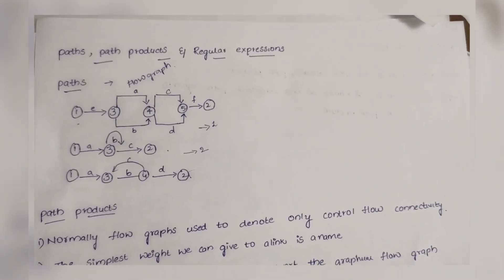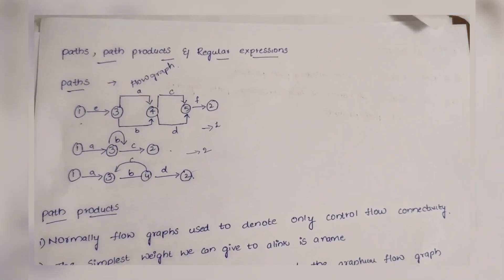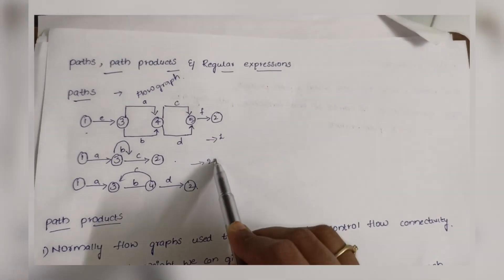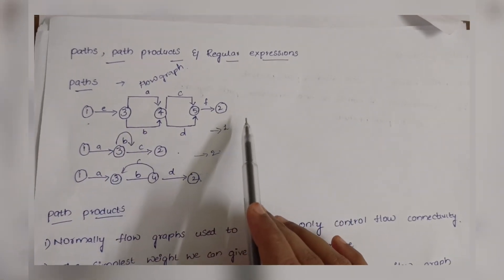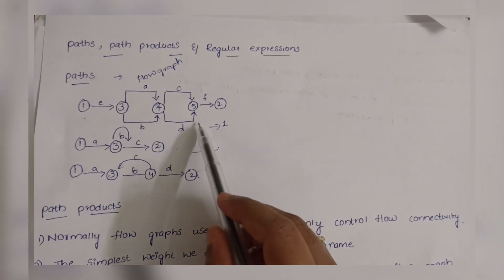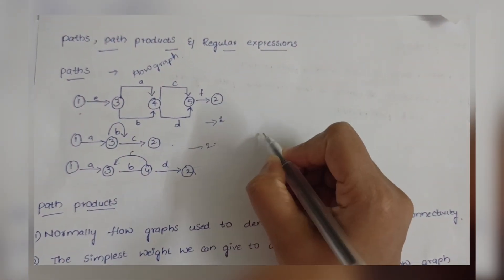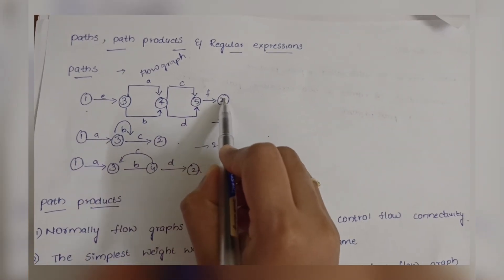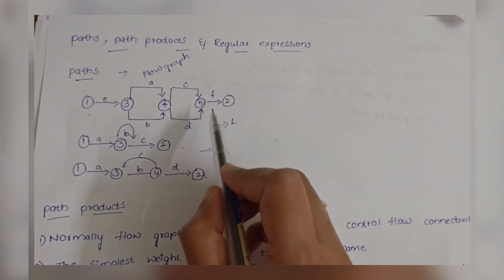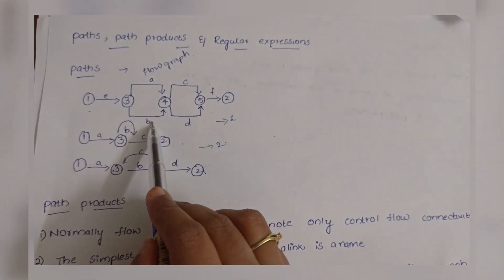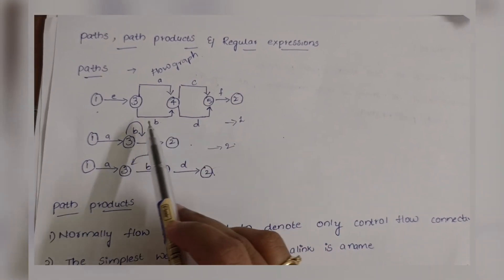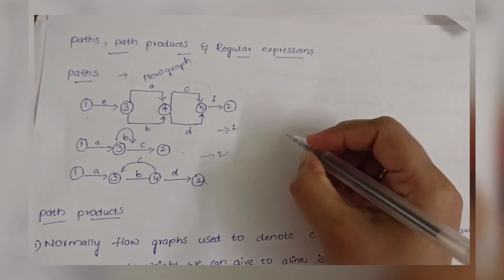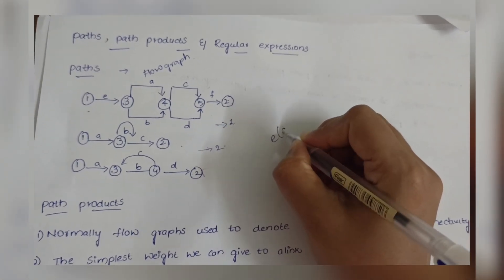In today's video we are going to discuss Unit 3 Part 1: paths, path products, and regular expressions. A path is nothing but a flow graph. Using this flow graph we define expressions — for example, from 1 to 3, 3 to 4, 4 to 5, and 5 to 2 is one expression. We can also go 1 to 3, 3 to 4 via B, D, and F. This is called a path expression.